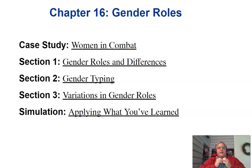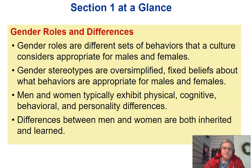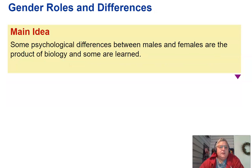Hey, welcome to psychology. It's chapter 16 — we're talking about gender roles today. Gender roles are different sets of behaviors that a culture considers appropriate for males and females. Gender stereotypes are oversimplified, fixed beliefs about what behaviors are appropriate for males and females. Men and women typically exhibit physical, cognitive, behavioral, and personality differences. Differences between men and women are both inherited and learned.